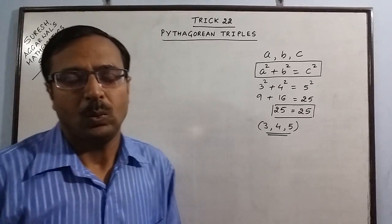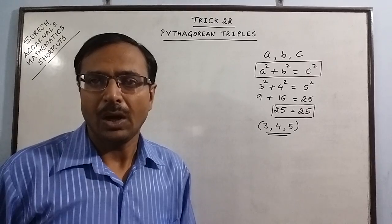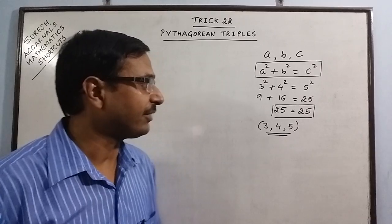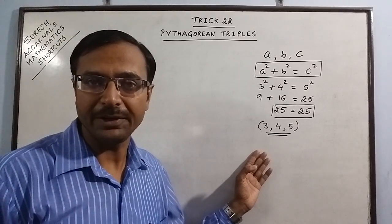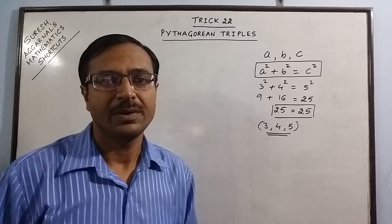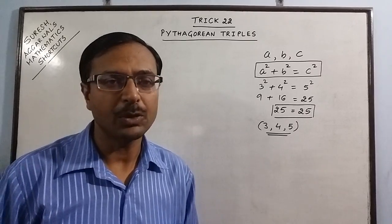This satisfies A square plus B square equal to C square. So we call 3, 4, 5 as a Pythagorean triplet. Now how many Pythagorean triplets are there? How we can find another Pythagorean triplet? Now these are some of the questions which are to be answered in trick number 22 today.